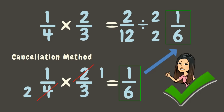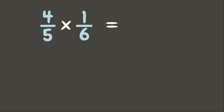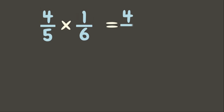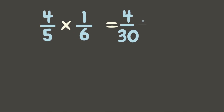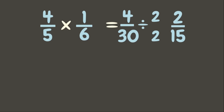Now let us try another example: 4 fifths times 1 sixth. 4 times 1 is 4, and 5 times 6 is 30. Now let's simplify our answer. 4 and 30 can be divided by their common factor, 2. 4 divided by 2 is 2, and 30 divided by 2 is 15. Our final answer is 2 fifteenths.